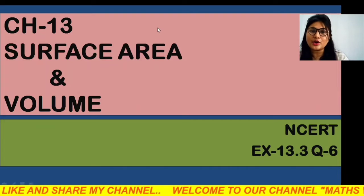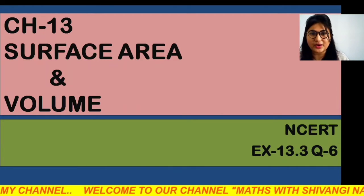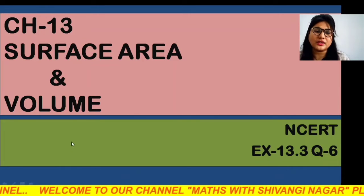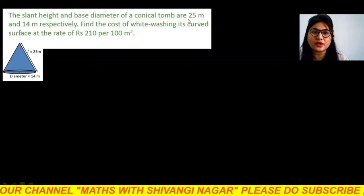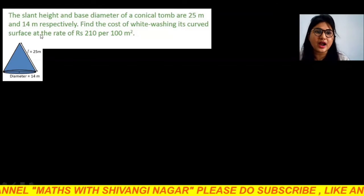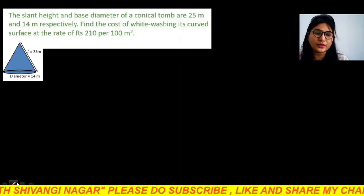In today's session we will continue my 13.3 exercise question number six. So let's start. This question is: the slant height and base diameter of a conical tomb are 25 meter and 14 meter respectively. You have a conical tomb.